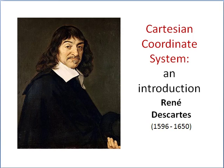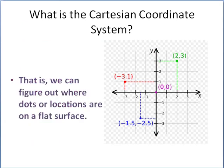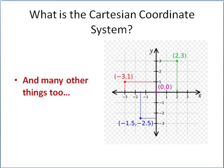This is a quick introduction to the Cartesian coordinate system, developed by Rene Descartes, a French mathematician and philosopher who lived several hundred years ago. The Cartesian coordinate system is a system whereby we can locate points on a plane—that is, we can figure out where dots or locations are on a flat surface, and we can do many other things with it as well.